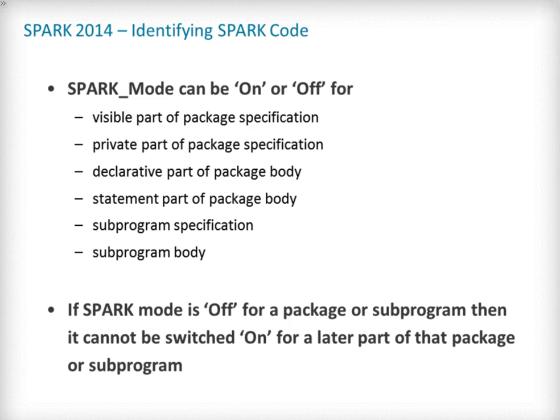Spark_Mode can be specified in a fine-grained manner on a per-unit basis. More precisely, a package has four different parts: the visible part and private parts of its specification, as well as the declarative and statement parts of its body. On each of these parts, Spark_Mode can be specified as either on or off. Similarly, a sub-program has two parts: its specification and its body. A general rule in Spark is that when Spark_Mode has been set to off, it can never be switched to on again. This prevents setting Spark_Mode to on on subunits of a unit with Spark_Mode off, and switching back to on when a previous part has been set to off.